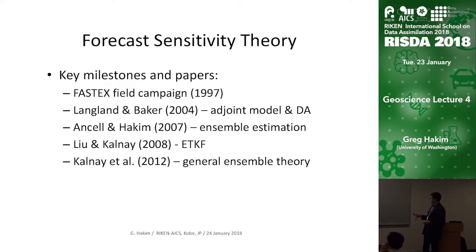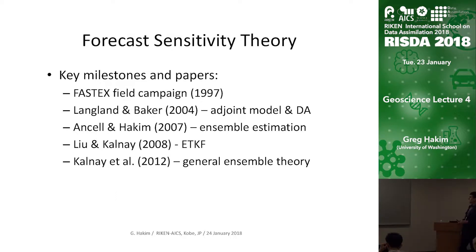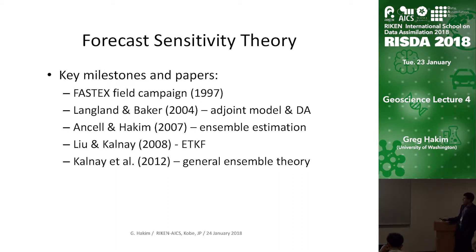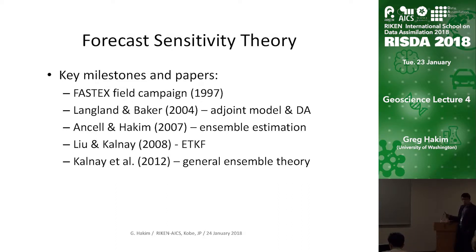Another fundamental contribution came in 2004 by Ralph Langland and Nancy Baker at the Naval Research Lab. They found a way — proposed a theory that they then applied with real observations — to estimate the impact of measurements on the future forecast using an adjoint model and the adjoint of the data assimilation system. I'm going to talk about my take on their theory here.